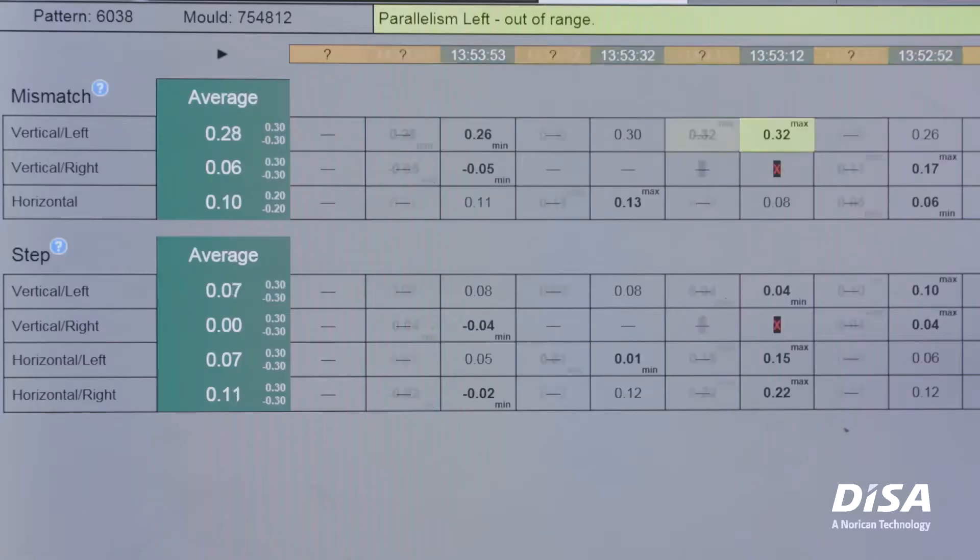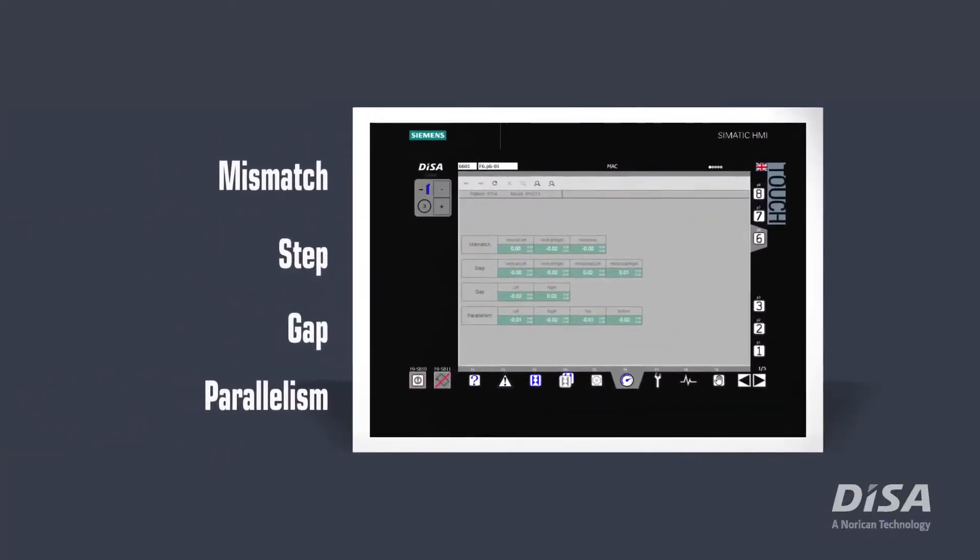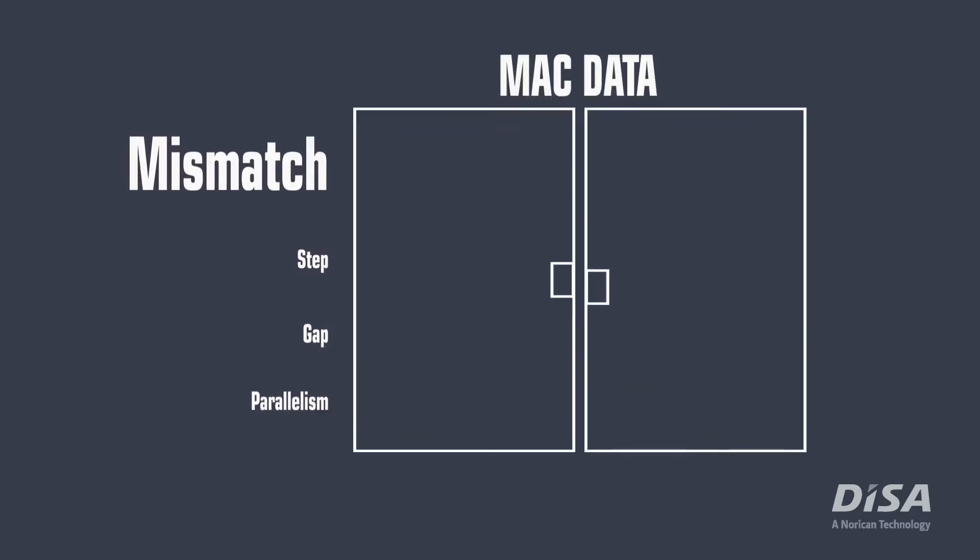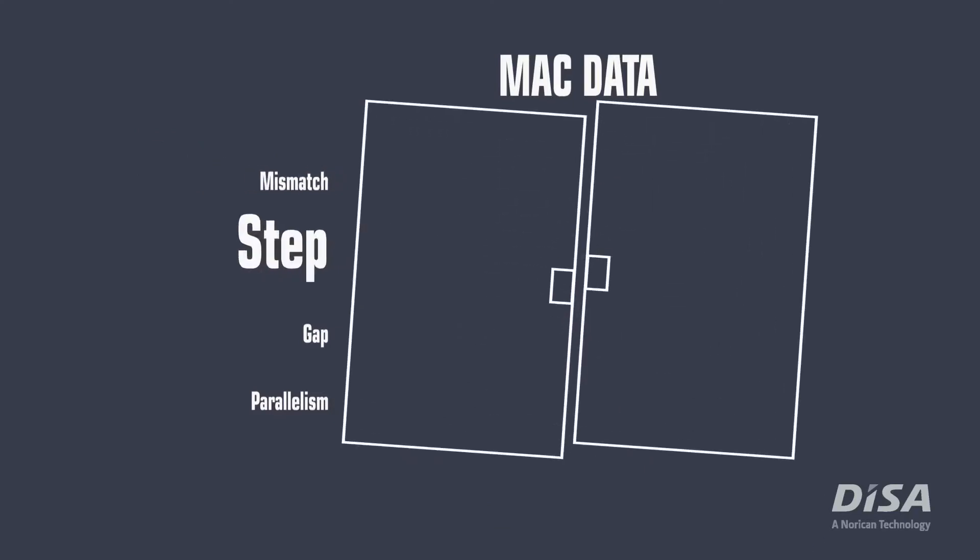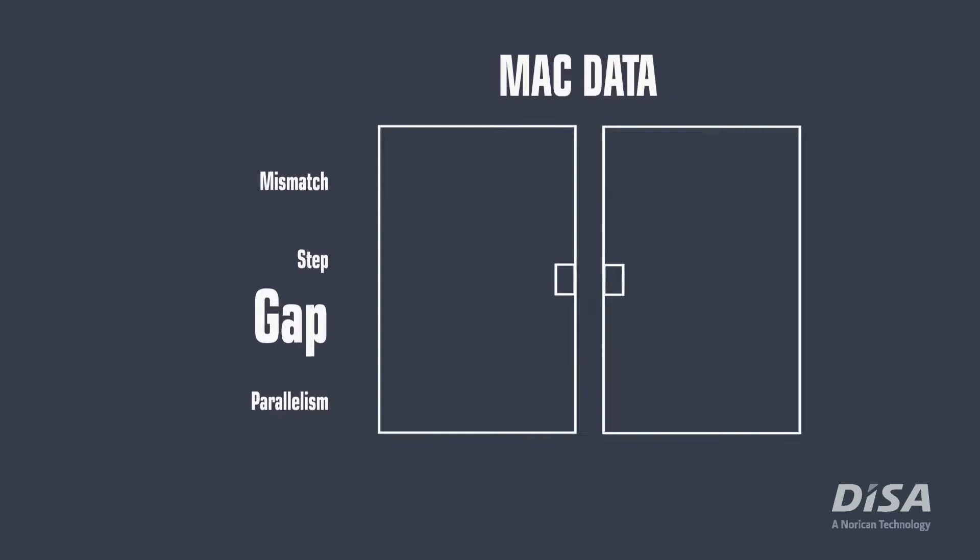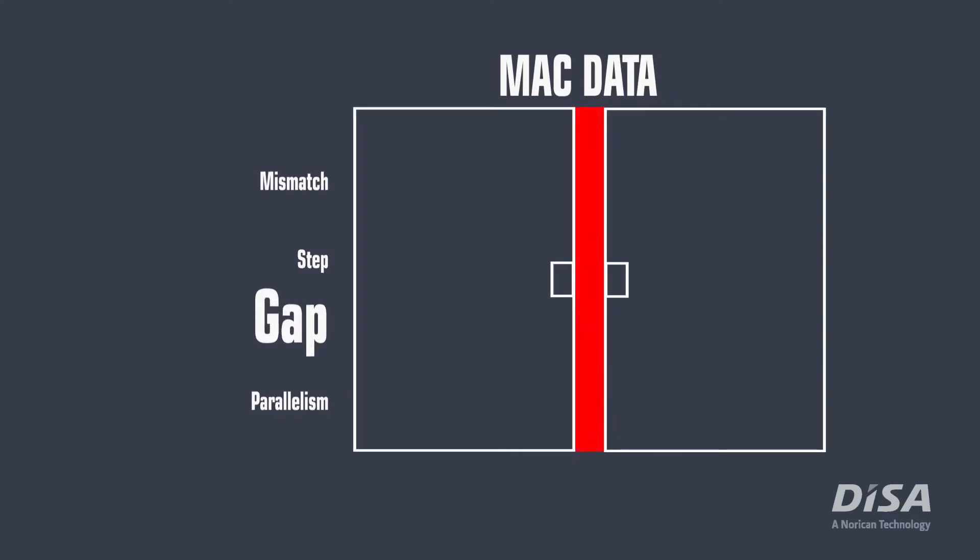The recorded data is processed and calculated in real time to obtain the following measuring parameters, also known as MAC data: Mismatch - the misalignment between cavities after close-up; Step - the misalignment between molds after close-up; Gap - the distance between two adjacent molds.